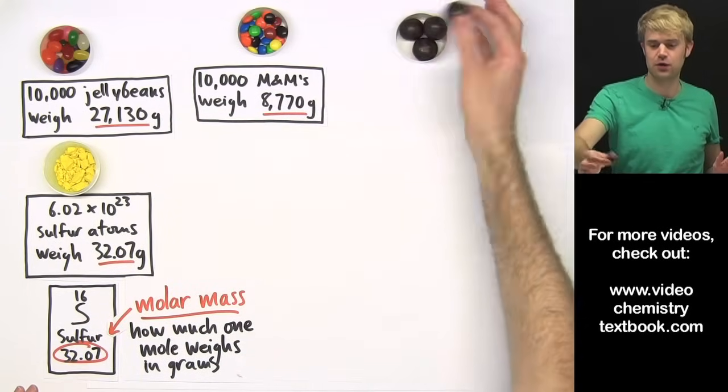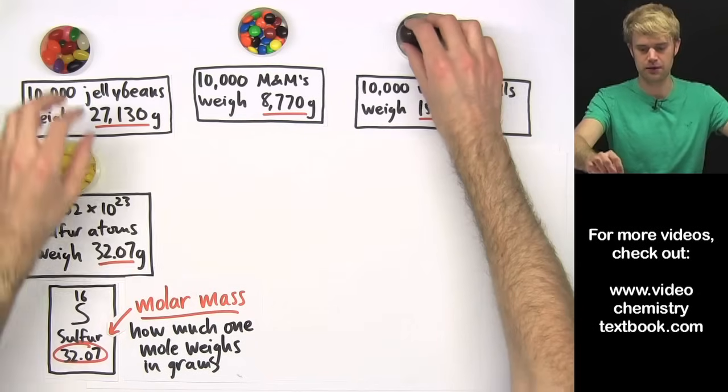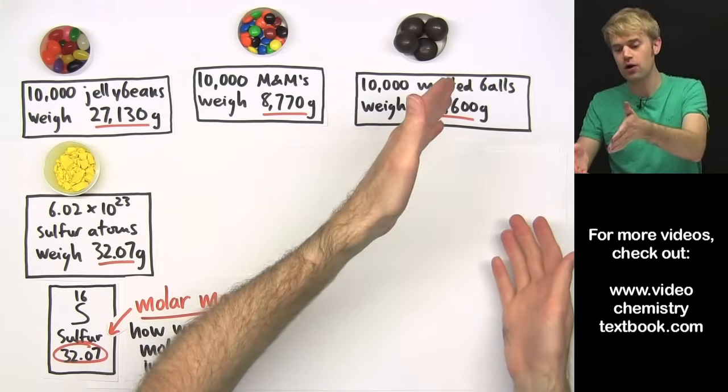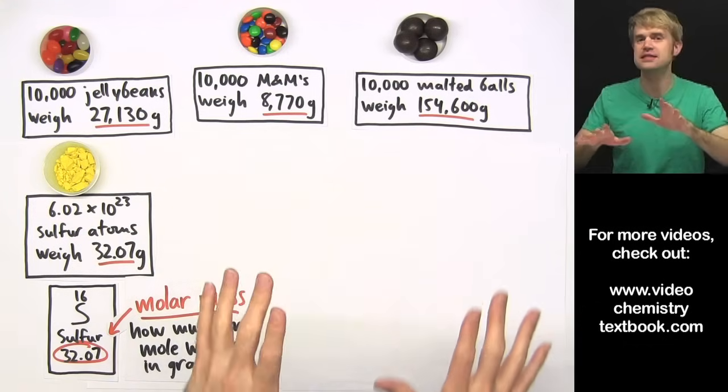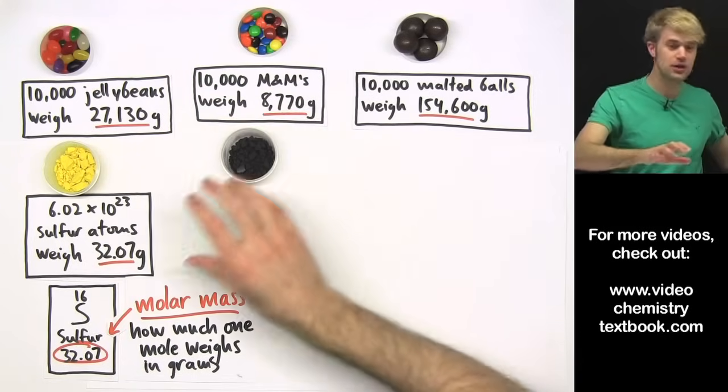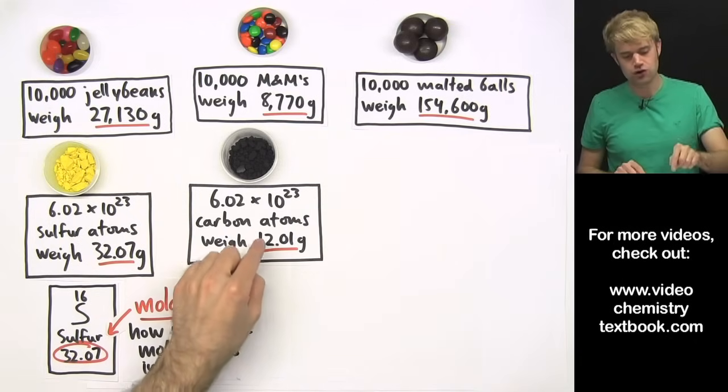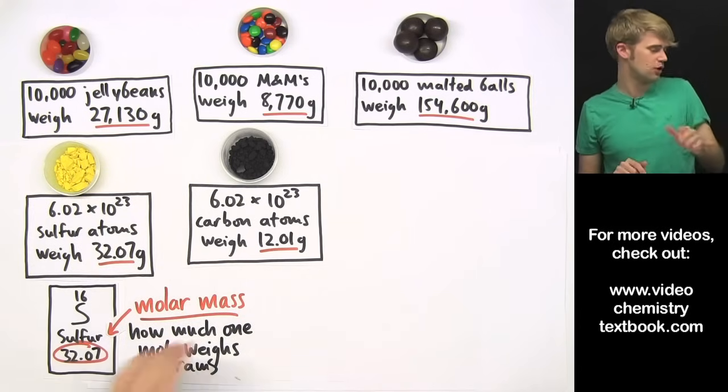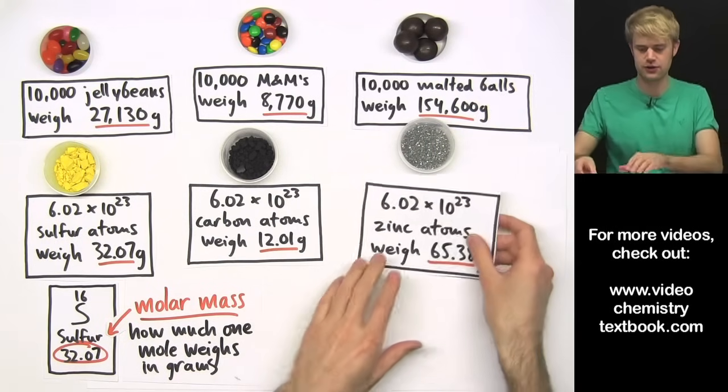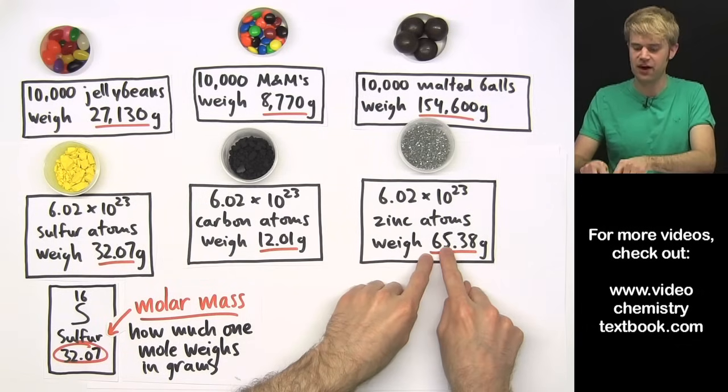On the other hand, a candy like one of these chocolate malted balls, very delicious, are a bunch heavier than the jelly beans. So 10,000 malted balls are going to weigh a bunch more, 154,600 grams. So it's the same way with atoms. Some are lighter and some are heavier. So carbon, for example, is a little bit lighter than sulfur. And 602 hexillion carbon atoms only weigh about 12.01 grams because carbon atoms are just lighter than sulfur atoms. On the other hand, something like zinc, zinc atoms are heavier than sulfur atoms. So 602 hexillion zinc atoms, a mole of zinc atoms, weighs 65.38 grams.